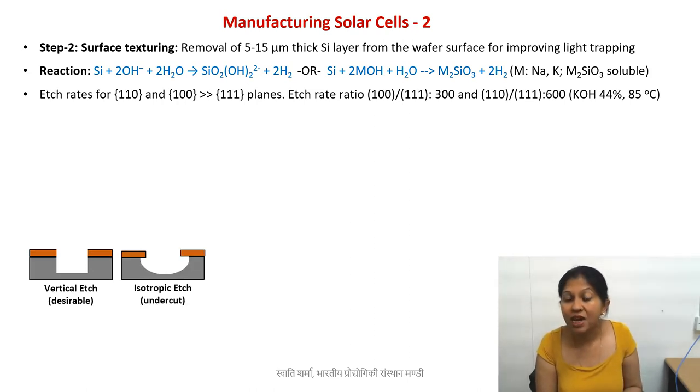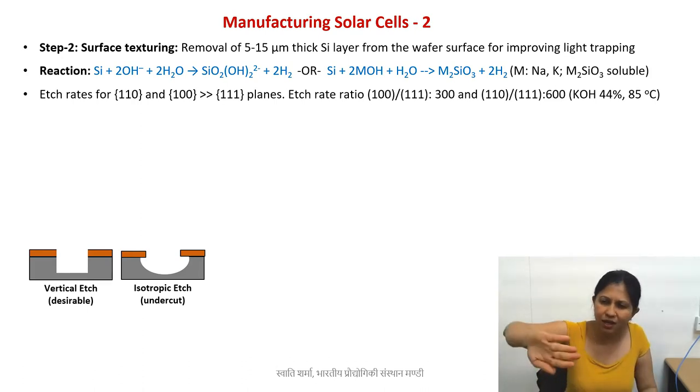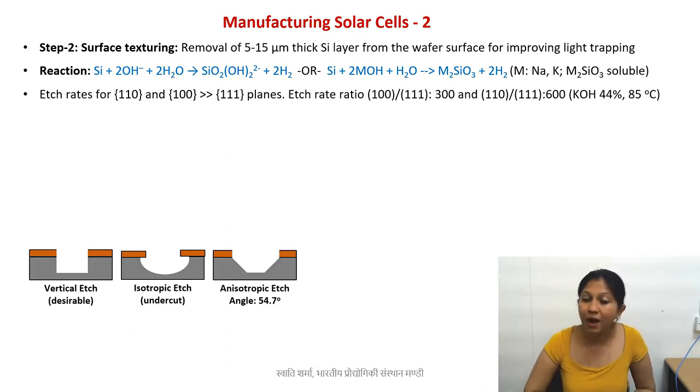With isotropic etch you get a well because the same rate of etching occurs in all directions. Sometimes it cuts under your polymer, dissolving silicon from under the polymer. This is known as undercut and is used in various microfabrication processes.